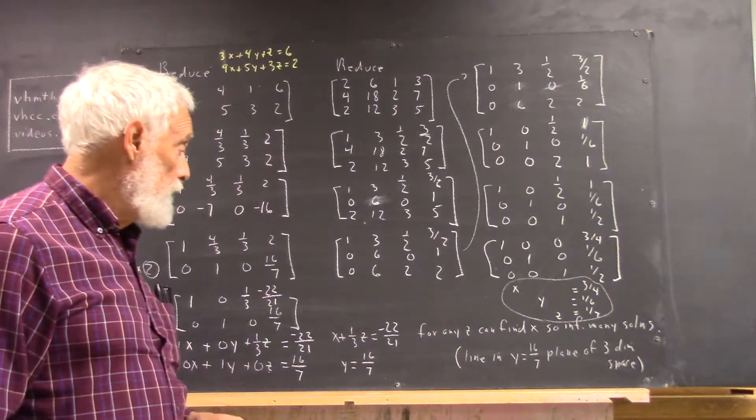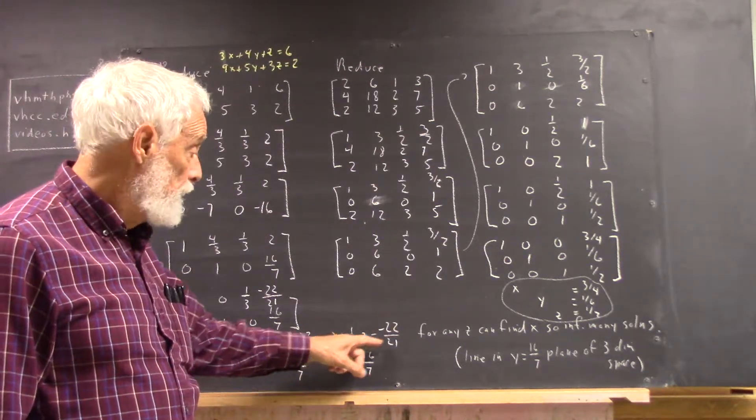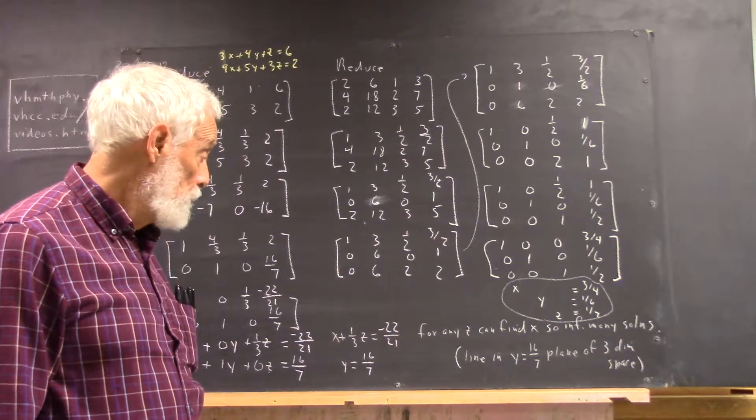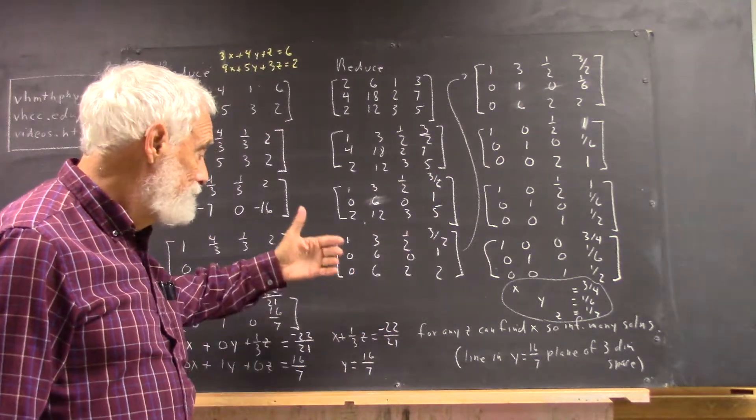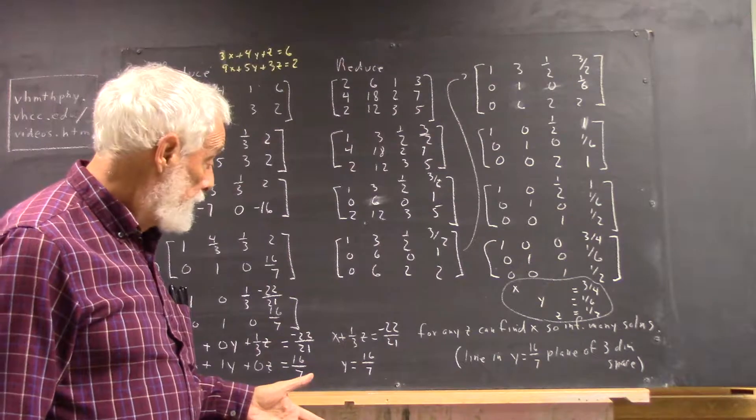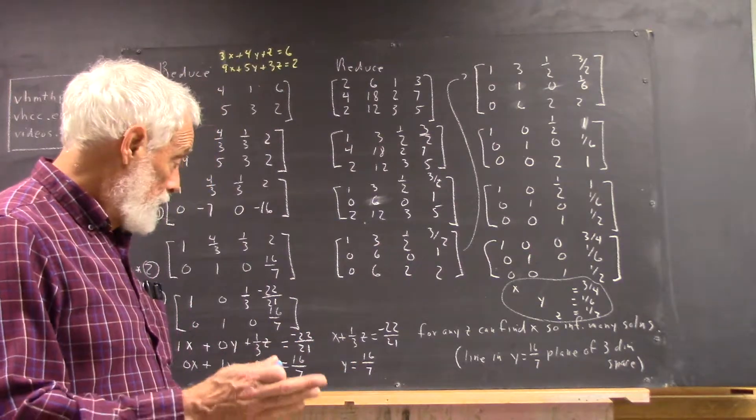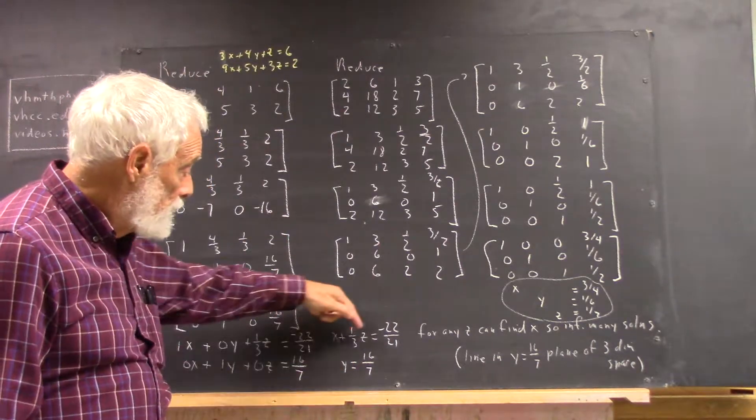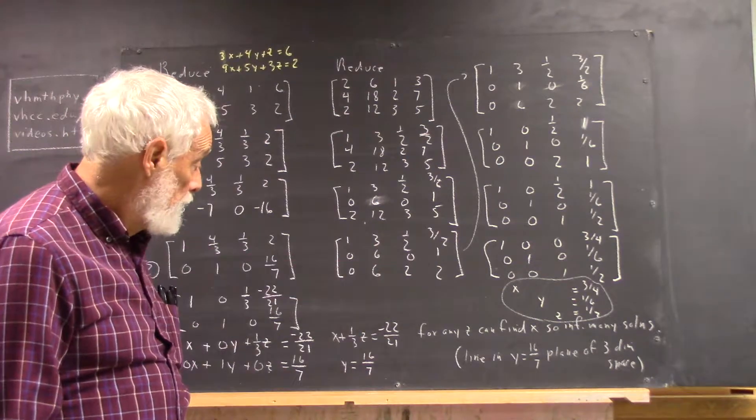And then within that plane, x plus 1 third z equals negative 22 over 21. Well, that's an x of z plane. It's located at y equals 16 sevenths, but this is just a straight line in that plane.